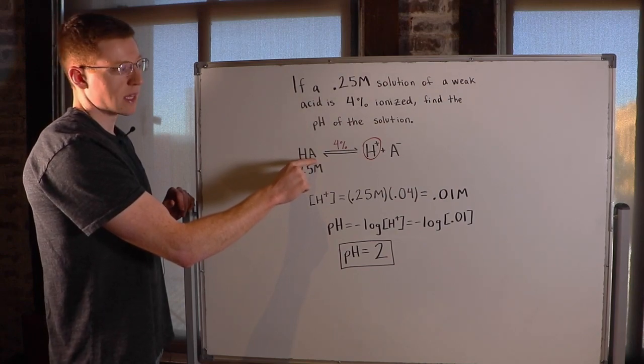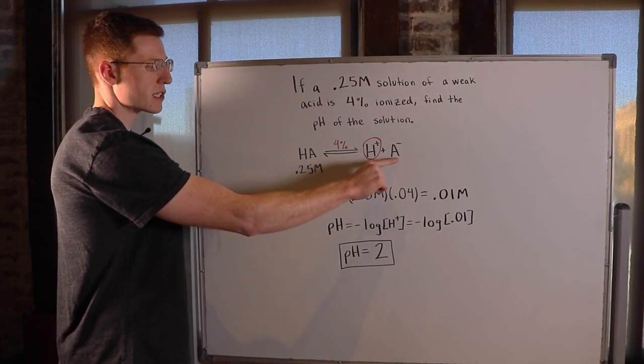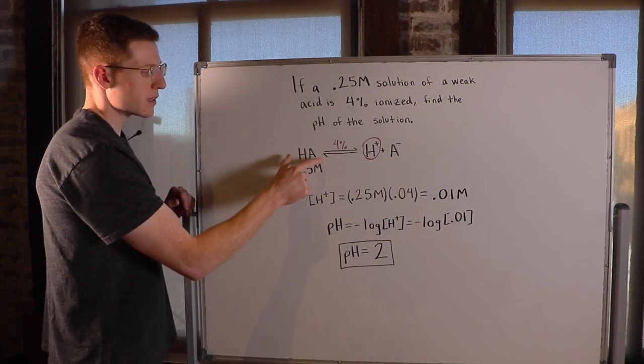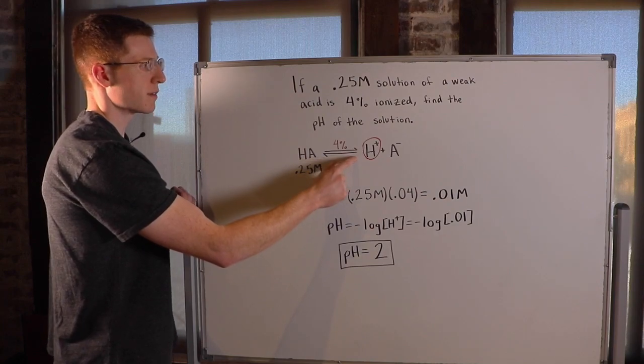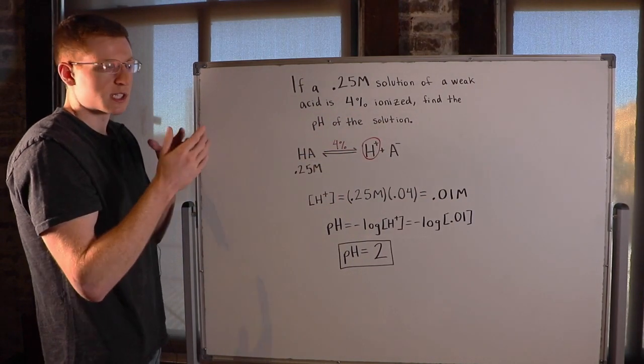H represents the proton that will be donated, and A is the rest of the acid. H-plus is the donated proton, and A-minus again is the rest of the acid, now an anion. And we know that this is going to dissociate to the extent of exactly 4%. Dissociation and ionization are really synonyms.